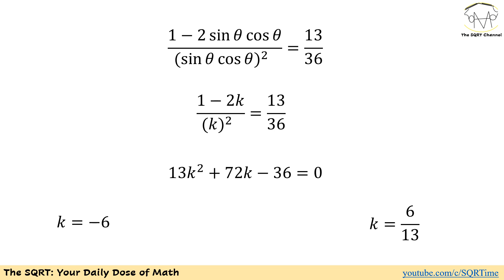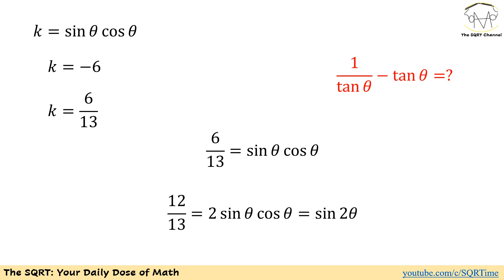This is a quadratic equation. If we simplify it, we can find that k can be negative 6 or 6 over 13. Now we need to know which one is correct. Sine of theta times cosine of theta cannot be negative 6 since the maximum possible value for sine and cosine are 1, so that's not acceptable. On the other hand, we have 6 over 13 as the valid value for sine of theta times cosine of theta.